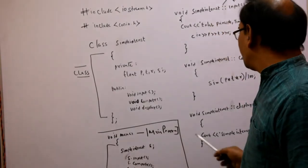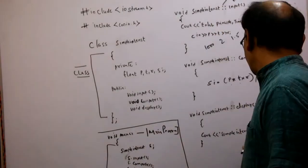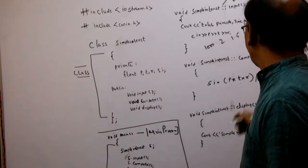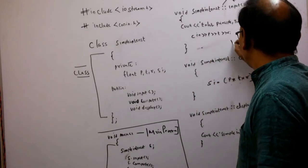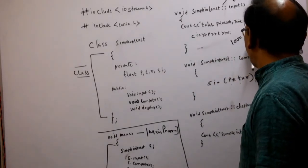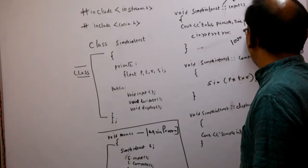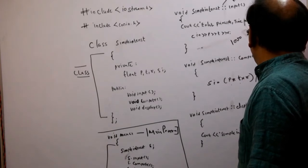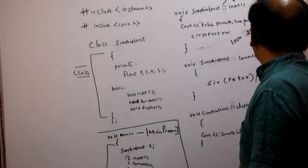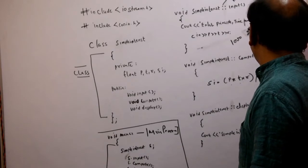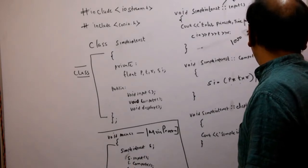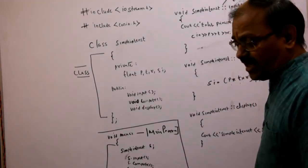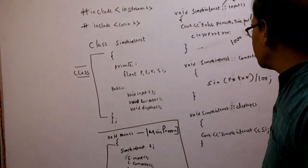Suppose we take principal = 1000, time = 2 years, rate = 3. Then: 1000 × 2 × 3 = 6000, divided by 100 gives 60. So the simple interest will be calculated as rupees 60, automatically by the system.